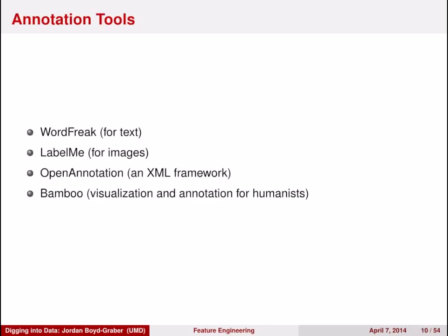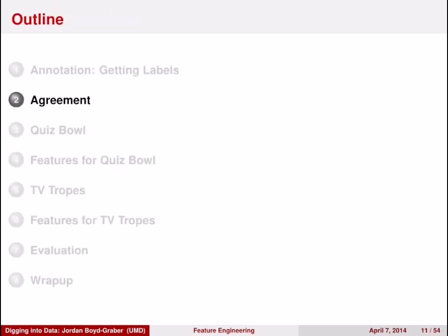So you need to make sure that your data have agreement. There are lots of great tools out there for annotating data: WordFreak, LabelMe, OpenAnnotation, Bamboo, and probably others. The bottom line is that you need to annotate your data, and part of this process needs to be the computation of agreement between your annotators.